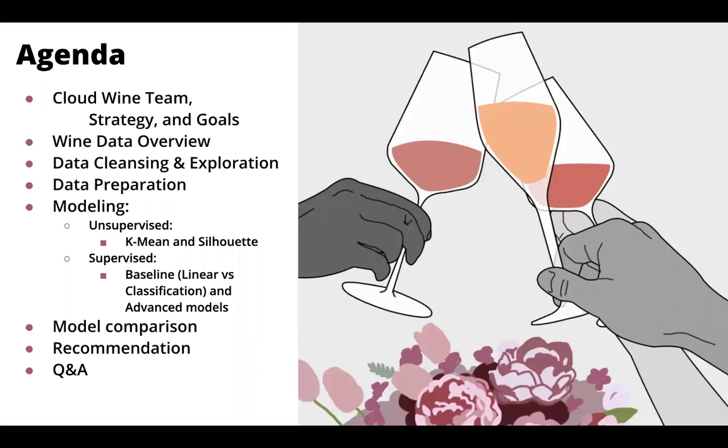Our agenda is we'll go over our team strategy and goals, an overview of the wine data set, talking about our data cleansing and exploration, our data preparation, and we'll go into our machine learning models. First, we'll start with unsupervised with k-means and silhouette models, and then supervised with linear regression, deep neural networks, and random forest. Then we'll compare our models and make any recommendations.